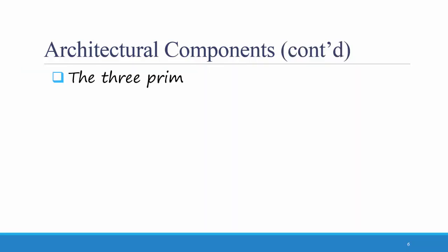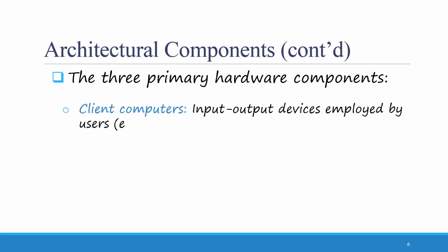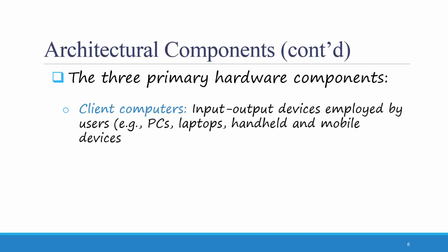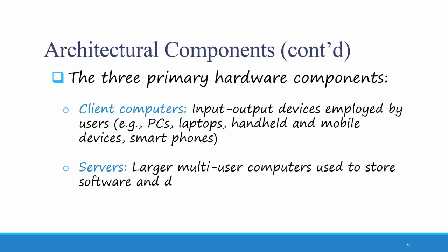There are three primary hardware components. First, client computers, which are the input-output devices employed by users. These could be PCs, laptops, handheld and mobile devices, or smartphones. Secondly, servers — larger multi-user computers used to store software and data. And finally, a network that connects the different computers. Your architecture design, then, is the hardware that you choose to use, how you network it together, and which type of software you place on which hardware.